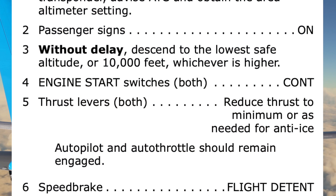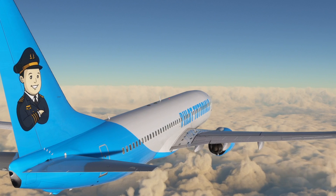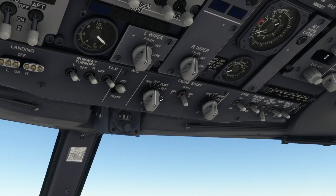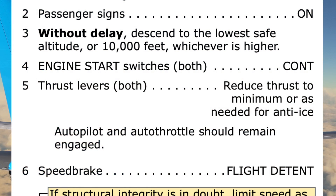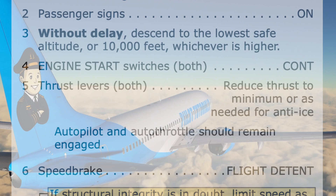Step 4 directs us to turn both engine start switches to the continuous ignition position. The next step is to reduce thrust on both engines. Selecting level change has already reduced thrust to idle, and no additional thrust reduction is necessary. The checklist then notes that the autopilot and autothrottle should remain engaged.